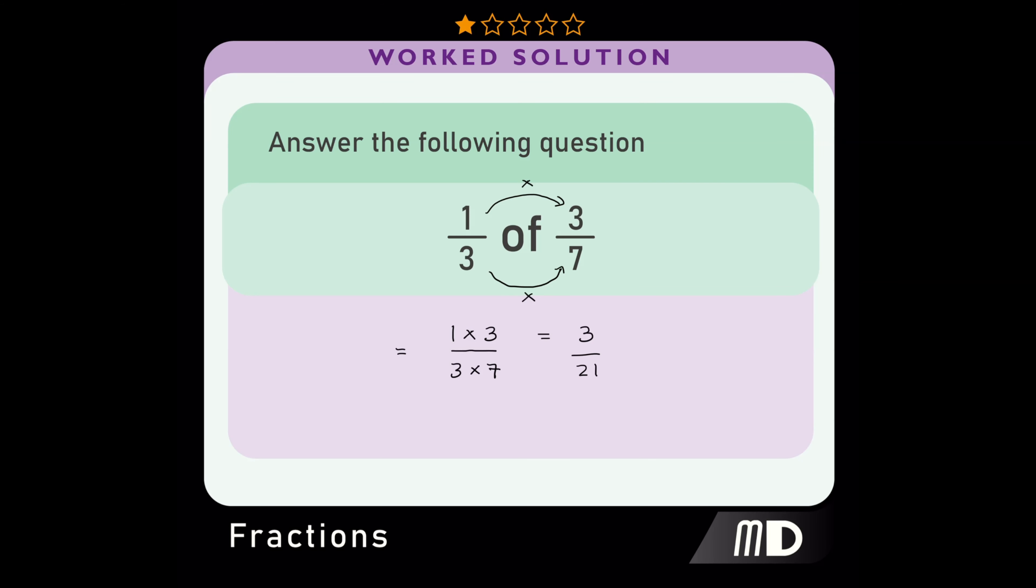To simplify our answer, we need to find the highest common factor of both the numerator and denominator. Then divide the numerator and denominator by that number.